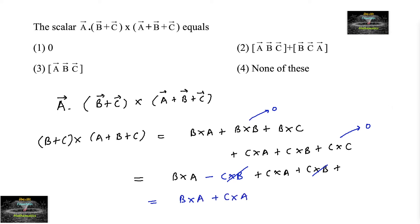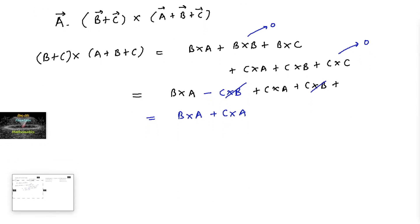Now we do the dot product. A dot of this cross product, that is B cross A plus C cross A. So this is A dot B cross A plus A dot C cross A.